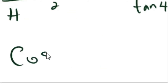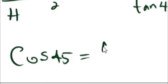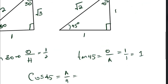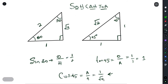Let's try cos 45, which is adjacent over hypotenuse. In the 45° triangle, the adjacent side is 1 and the hypotenuse is root 2, so cos 45 = 1 over root 2. This is another way you can remember special angles and use them in questions where you are told not to use a calculator.